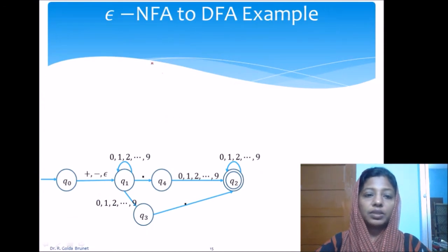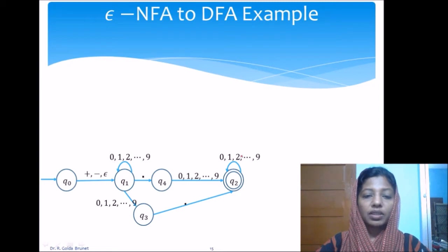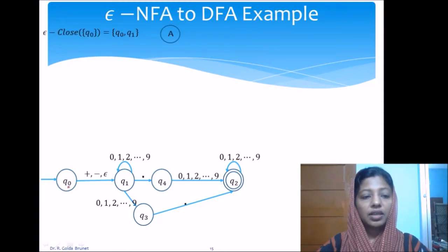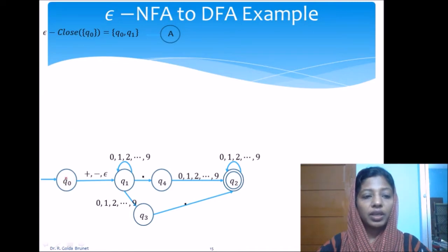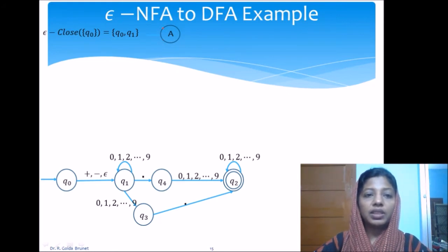Let us work out an example. This is the epsilon-NFA constructed to accept decimal numbers with an optional sign, a decimal point, and strings of digits before and after the decimal point where either digit string can be empty. We start with the starting state of the DFA, which is the epsilon closure of Q0. The epsilon closure of Q0 includes Q0 (by basis) and Q1 (via an epsilon transition). We label this state A.